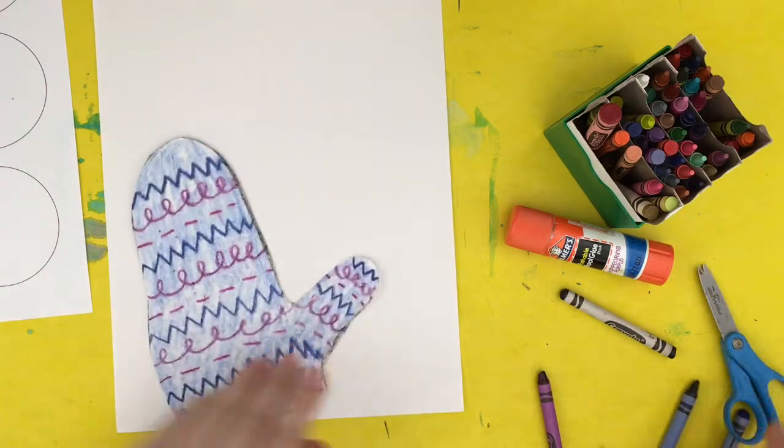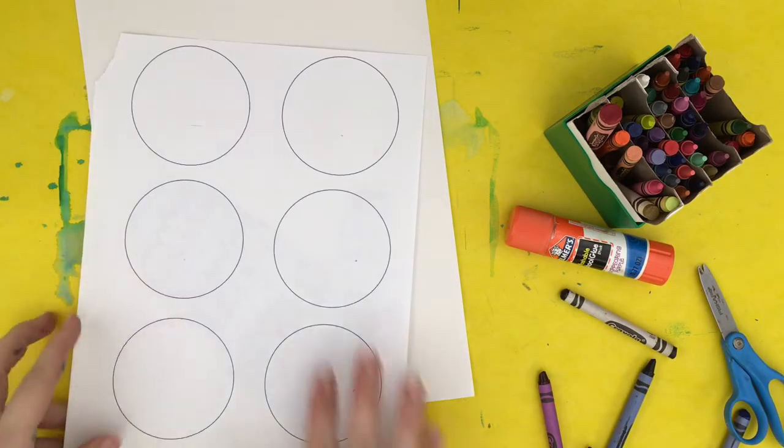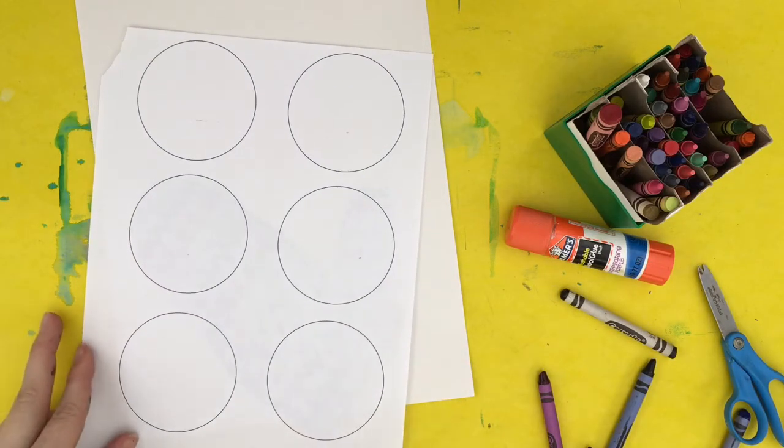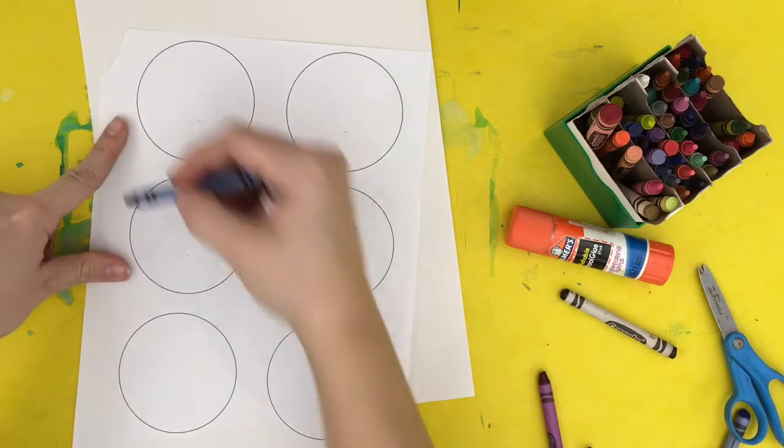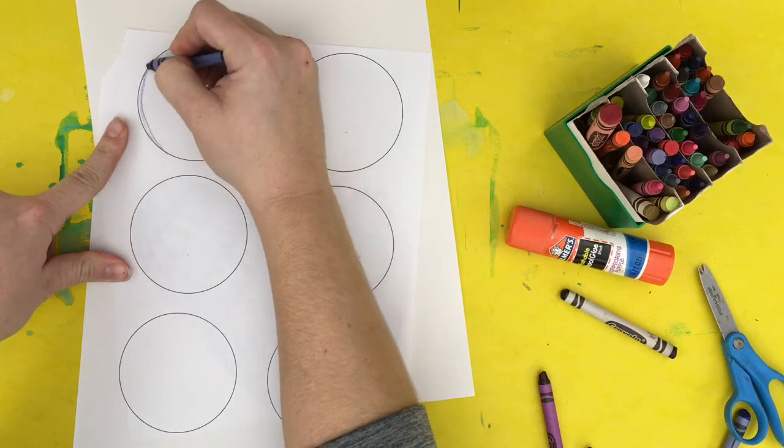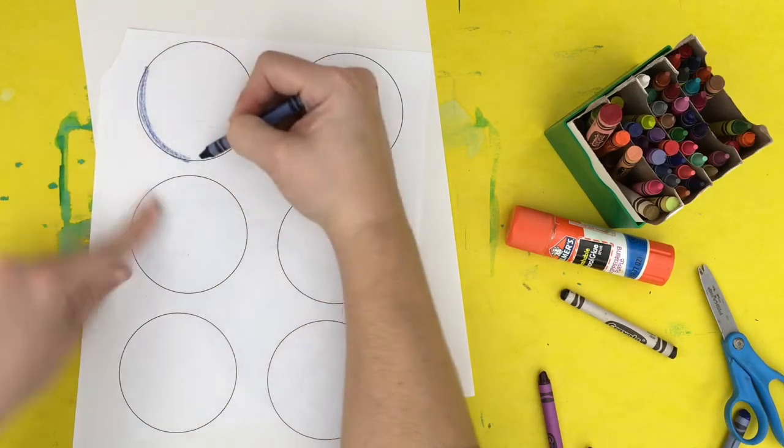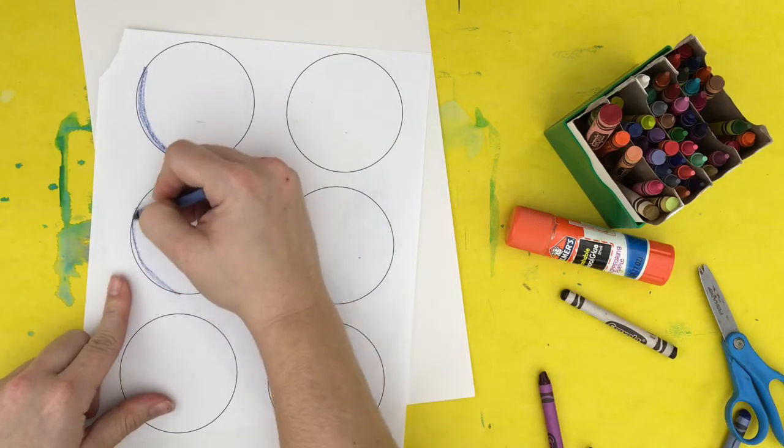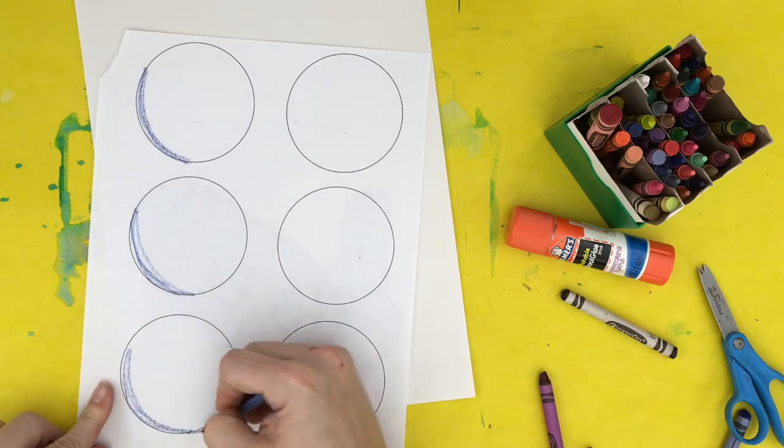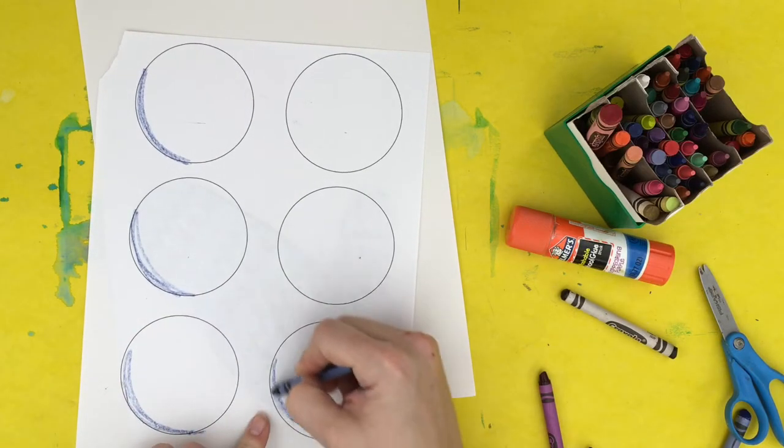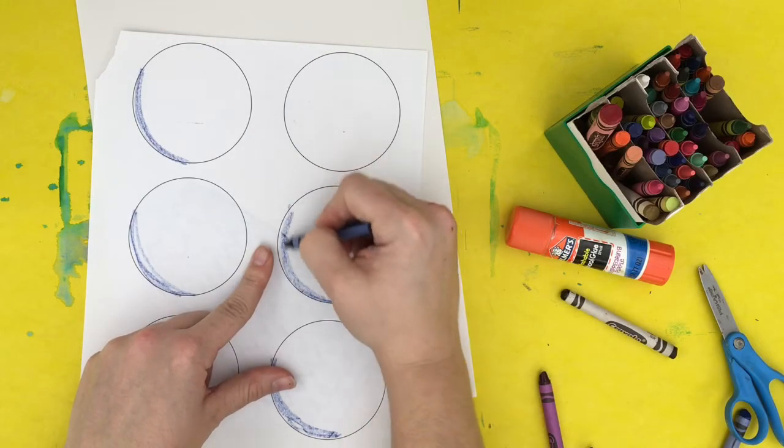And then we also need to work on our snowballs. So I have these circles here. What I'm going to do to make them look even more round is put a little bit of a blue C shape off on one side. And that gives it a shadow to make it look 3D. It will also help these shine from the background. So I'm going to do this. I'm not coloring them because snowballs are white.